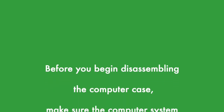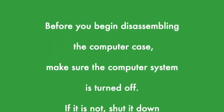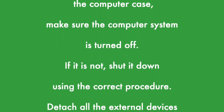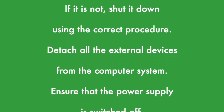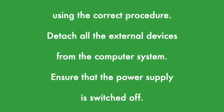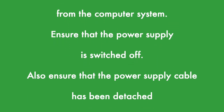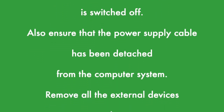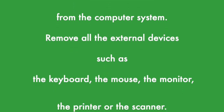Before you begin disassembling the computer case, make sure that the computer system is turned off. If it is not, shut it down using the correct procedure. Detach all the external devices from the computer system. Ensure that the power supply is switched off, and the power supply cable has been detached from the computer system.